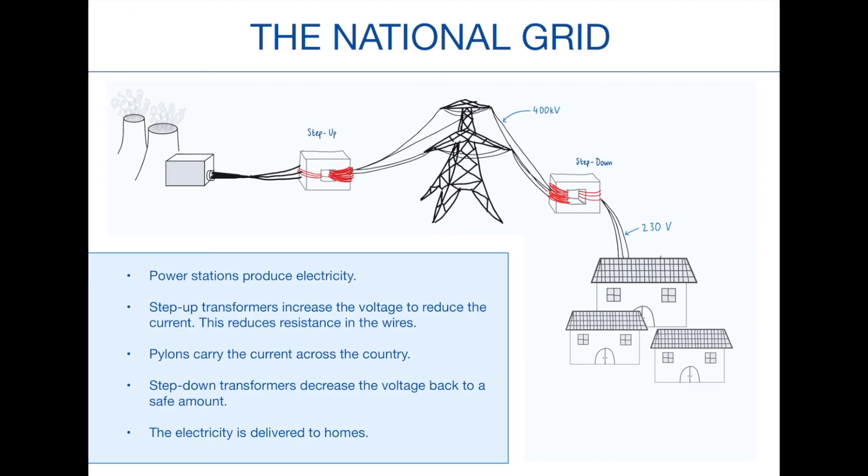A step-up transformer increases the voltage in the wires. Now, the reason we do this is because that reduces the current if we reduce the voltage. And by reducing the current, again think of it like the traffic with the cars on the road. If we reduce the traffic, that's going to reduce the resistance. In electricity, if you have a lower resistance, the wires won't get as hot and you won't lose as much power and energy to things like thermal energy sources. So that is why a step-up transformer is here.